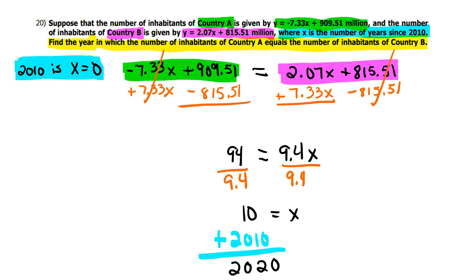Find the year in which the number of inhabitants, yeah, the year is 2020. And what a great year that was. Ugh. Anyway, that's number 20.